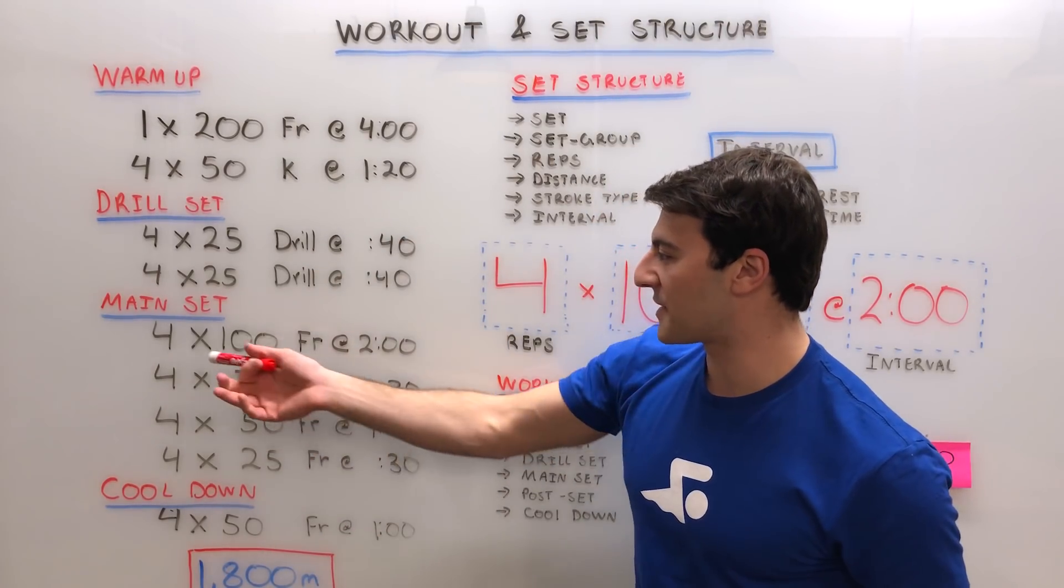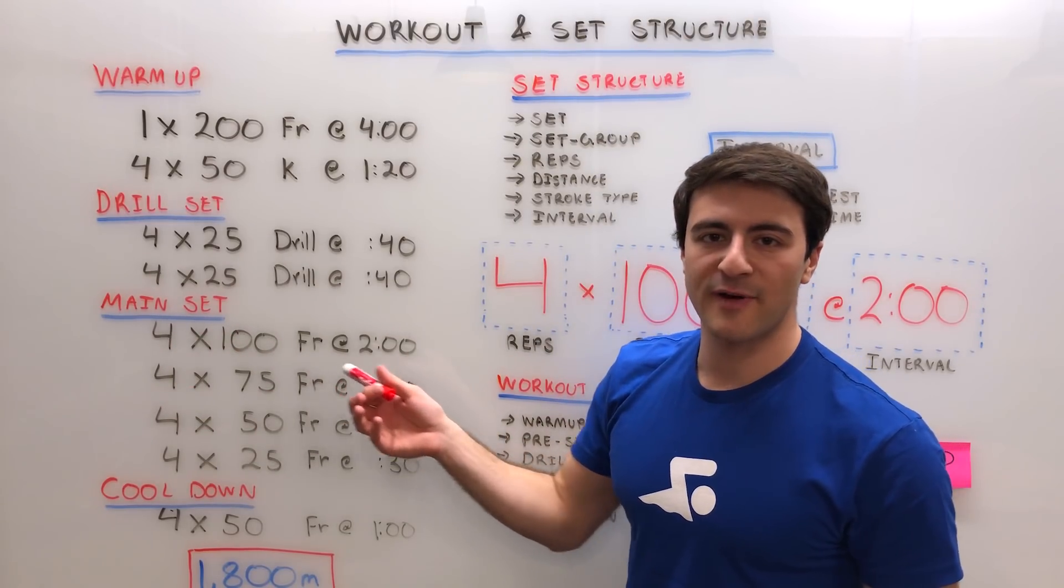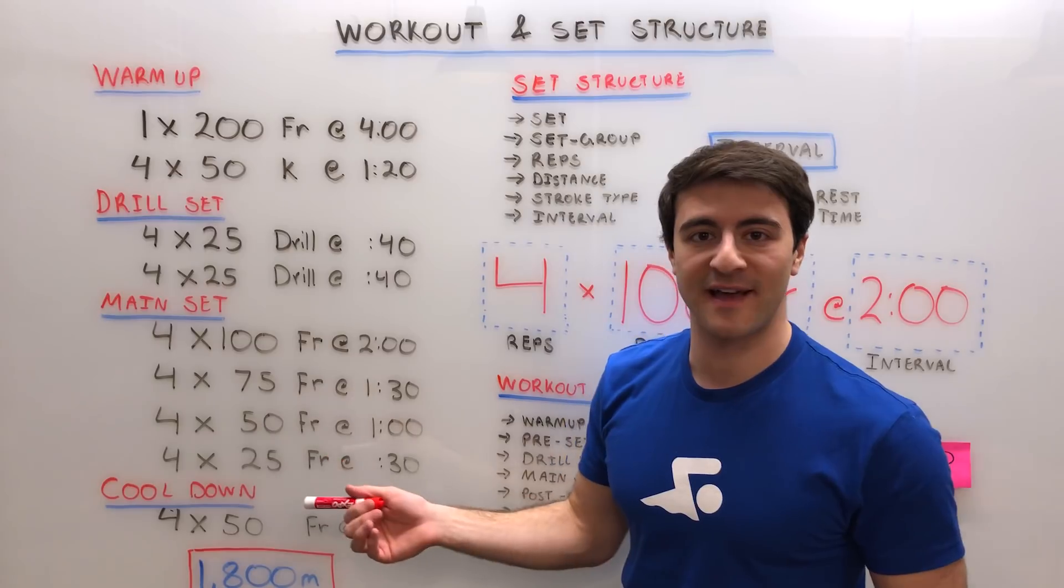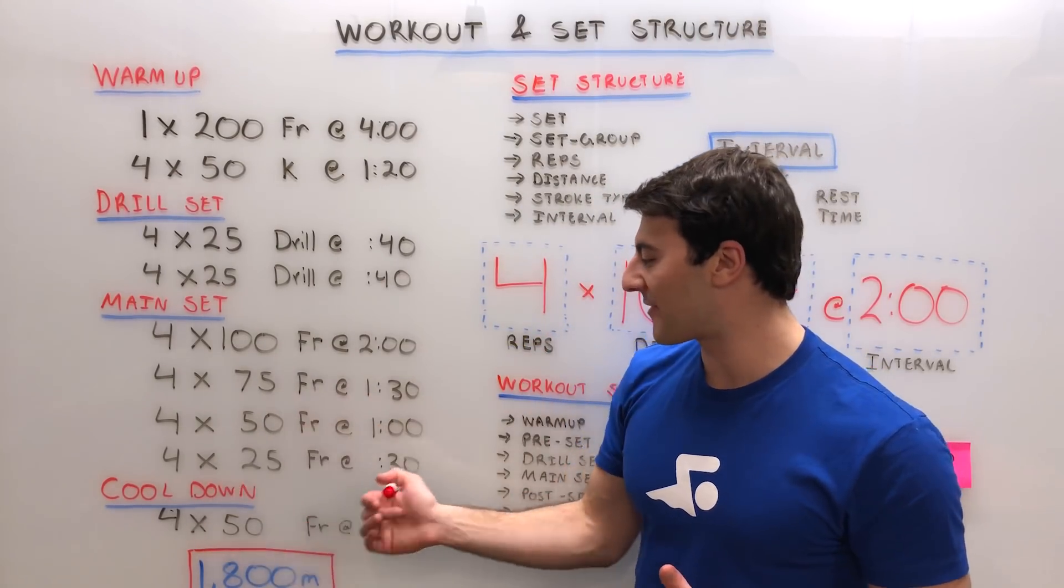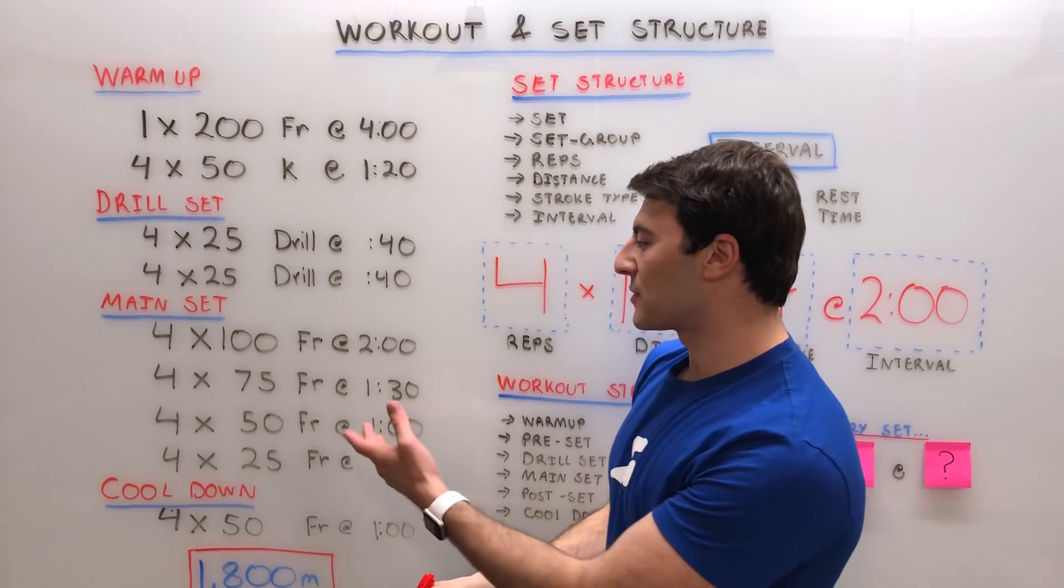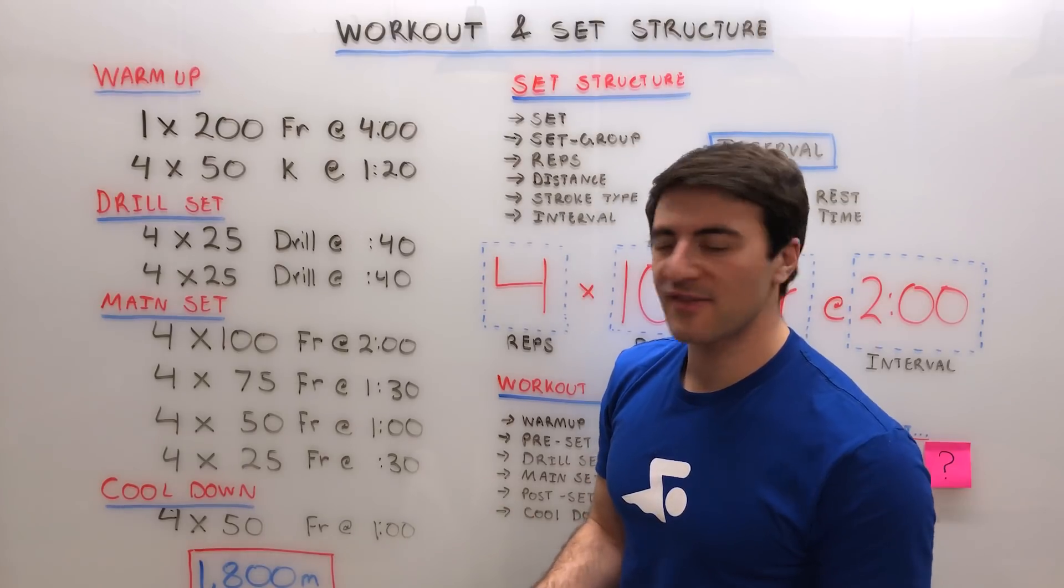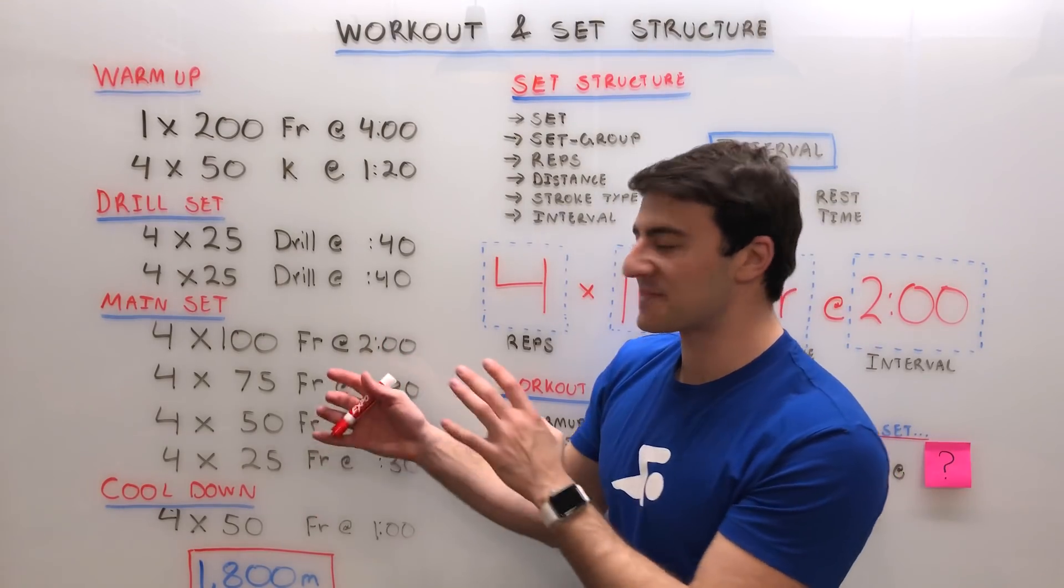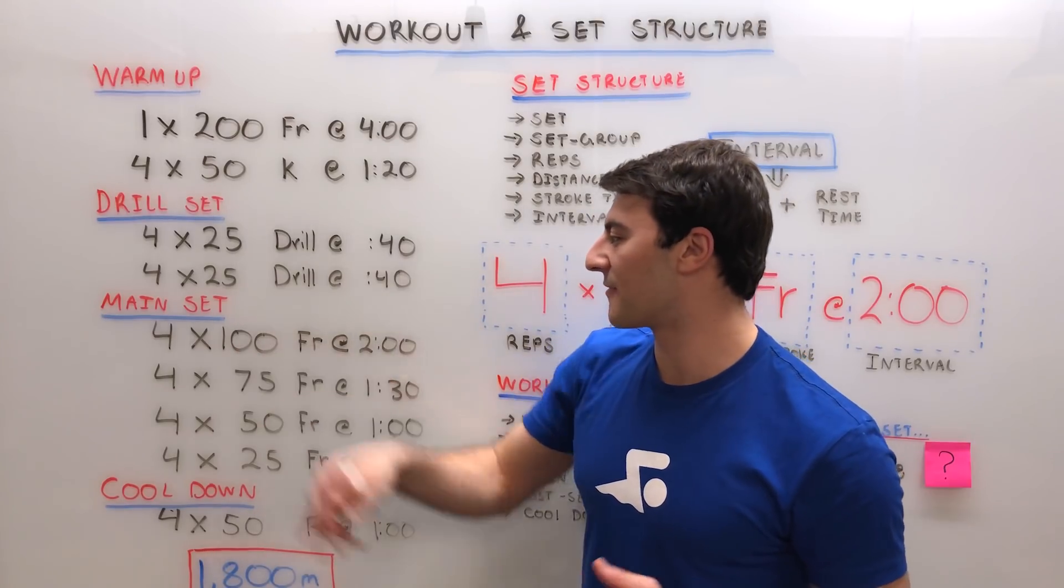If you look at the intervals here on the main set: 4x100s freestyle on the two minute, followed by 4x75s freestyle on the 1:30, 4x50s on the minute, and then 4x25s on the 30. Now it looks like the goal of this set is aerobic focus in nature because the interval stays on the same pace relative to the total distance of the swim.